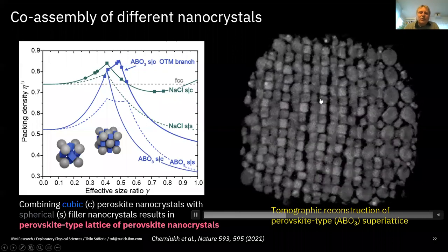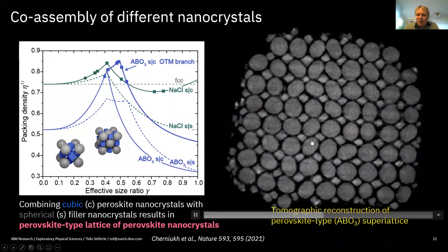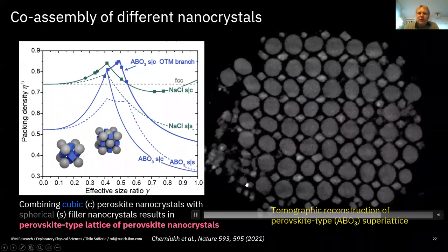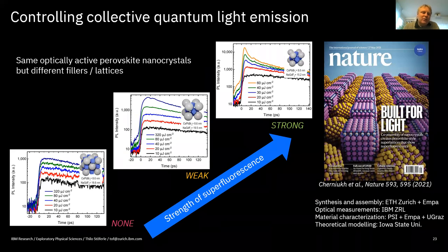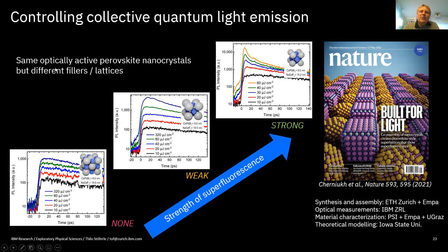Through tedious work finding the right conditions, these perovskite-type superlattices can be assembled. A TEM tomography movie shows cutting through such a perovskite-type superlattice. Using the same optically active nanocrystals but different fillers to realize different lattice structures, you can change the strength of superfluorescence observed in the system just by tuning the crystal lattice. The binary and ternary assemblies — mixing three kinds of quantum dots — enable realization of low-dimensional columnar structures, opening tremendous possibilities for engineering collective coupling.